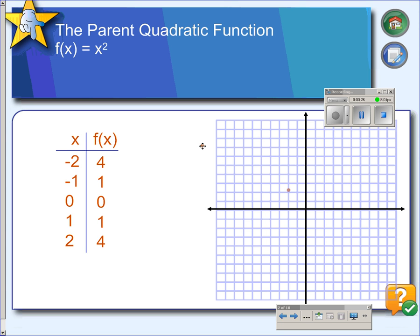So if x is negative 2, y would be 4. When x is negative 1, y is 1. When x is 0, y is 0. And we get 1, 1 and 2, 4.